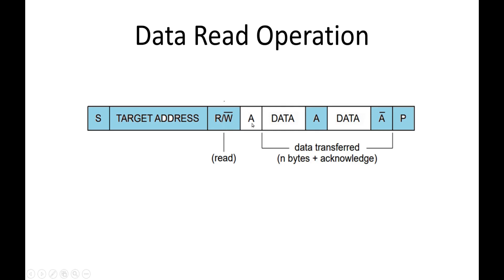The acknowledgement comes from the slave side, control of the bus is given to the slave, and then the slave sends the first byte, and the master gives an acknowledgement. Again, the second byte is given by the slave, and then a NACK is given by the master because the master knows it only needs to receive 2 bytes of data from the slave, after which the master can initiate a stop condition.